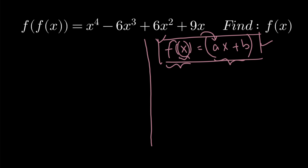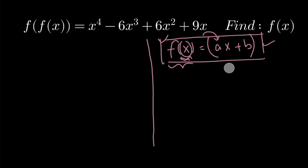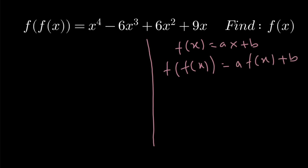Now using this fact, what can we say about the value of f of f of x? The function f is basically the equation ax plus b. The place where we need to put the variable — here the variable was x, but now the variable is f of x. So we simply put f of x in that place, giving us a times f of x plus b.